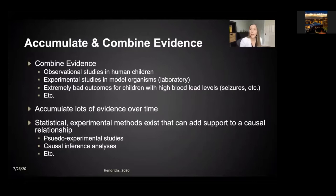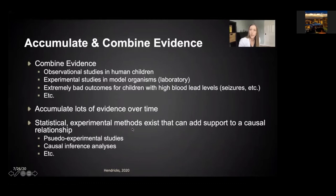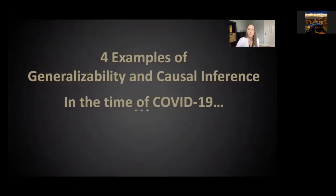What do we do when we can't do an experimental study? We can combine evidence. We can use observational studies in children, and we can use experimental studies in model organisms — while it's not ethical to perform an experimental study in children, I can perform one in mice giving one group high lead and another group low lead. I can also look for extremely bad outcomes, accumulate lots of evidence over time, and use statistical and experimental methods that can add support to a causal relationship. In economics, a commonly used approach is a pseudo-experimental study. We also have causal inference analysis. Experimental studies remain my gold standard, and those are the ones from which I can conclude a causal relationship.